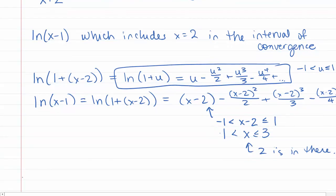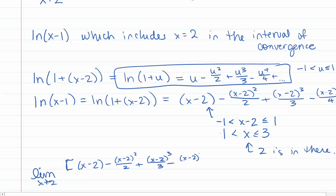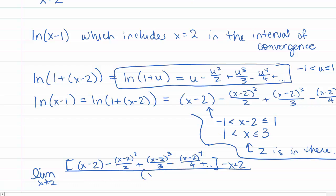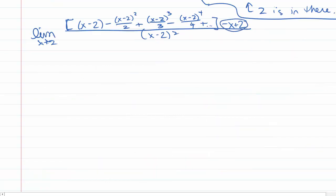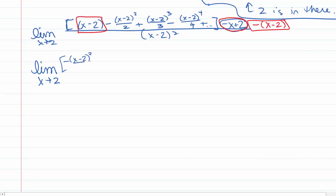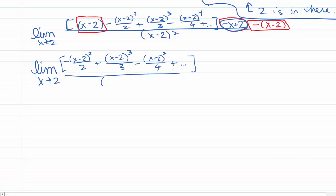We take the limit as x goes to 2 of [(x-2) - (x-2)²/2 + (x-2)³/3 - (x-2)⁴/4 + ⋯ - x + 2] / (x-2)². The term -x + 2 can be rewritten as -(x-2), so the positive (x-2) and negative (x-2) cancel. We're left with the limit of [-(x-2)²/2 + (x-2)³/3 - (x-2)⁴/4 + ⋯] / (x-2)².